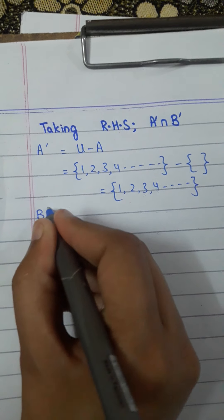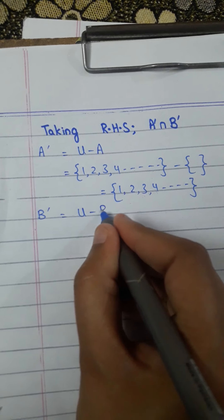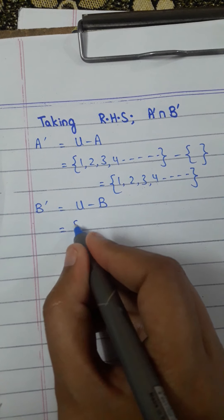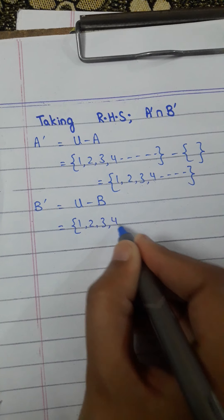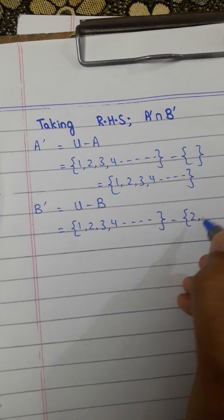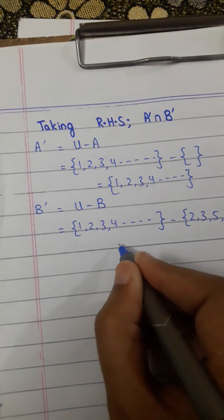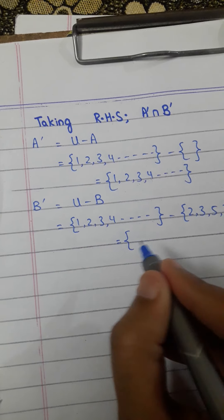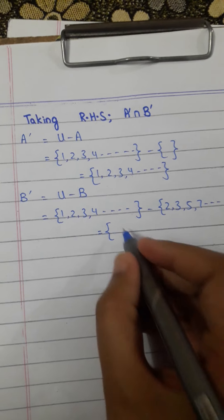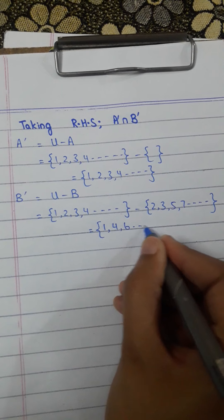Now find B complement. B' = U minus B. Putting the value of U: {1, 2, 3, 4, ...} minus B which is {2, 3, 5, 7, ...} and so on. The answer becomes the members which are present in U but not in B: {1, 4, 6, ...} and so on.